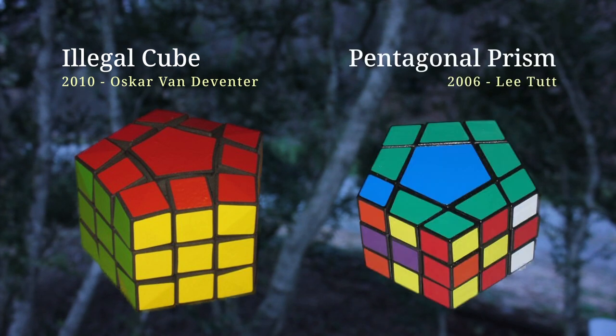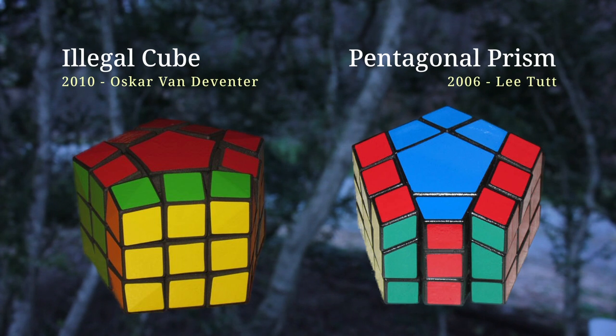This concept was inspired by Oskar van Deventer's Illegal Cube, which is a fully functional 3x3 pentagonal prism. Oskar called it the Illegal Cube because it's designed to permit 90 degree turns, which normally wouldn't be allowed on the geometry.